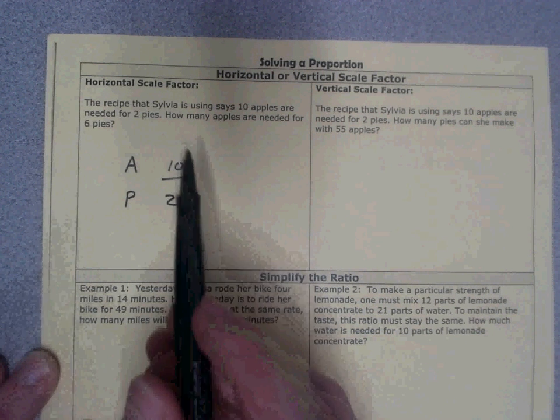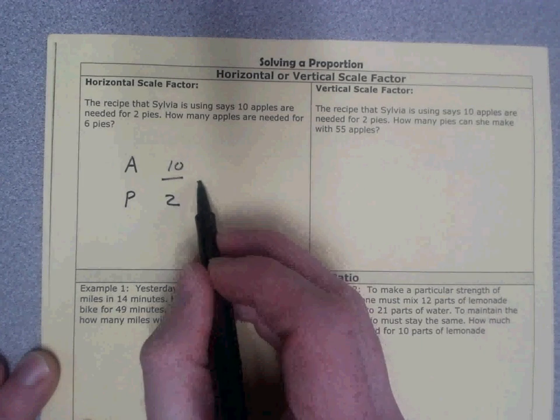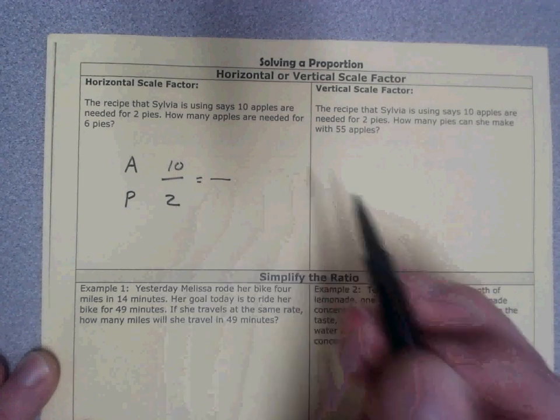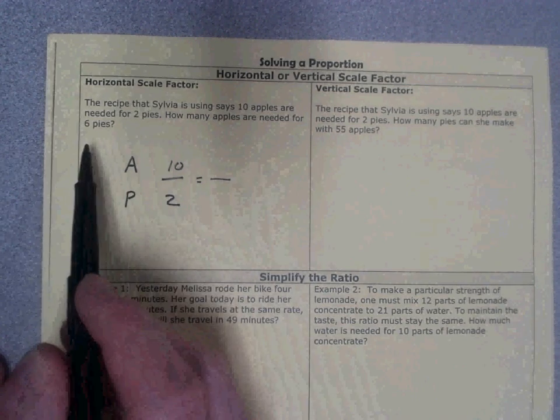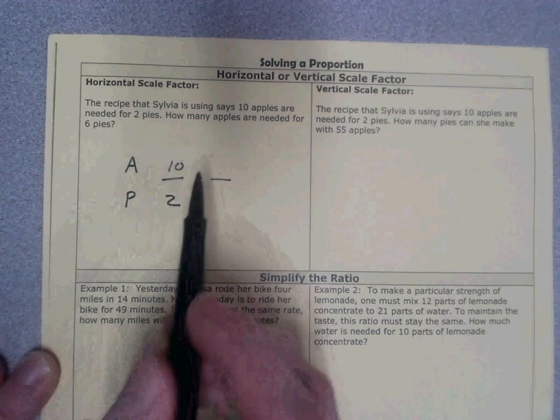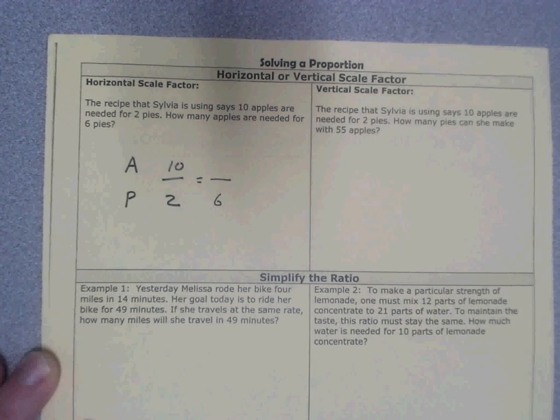Now I've got a little bit more information that says how many apples are needed for six pies. So I'm going to put an equal sign. Now this is the second of two ratios in my proportion. It says six pies. So I'm not going to put the six on top. That's where I have my apples. I'm going to put the six on bottom because that's where I'm putting all my pies.